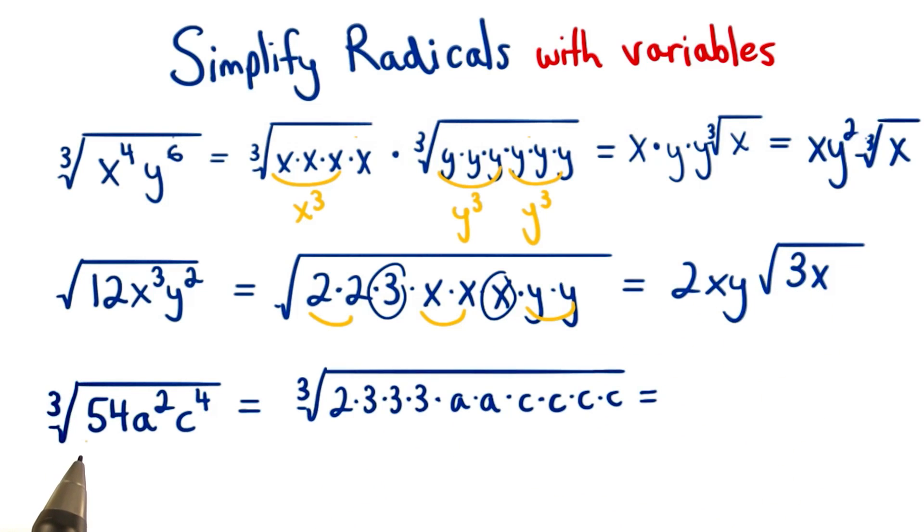For the second one, we want to find factors that repeat three times, since our index is a 3. We have three 3's and three C's, so we can pull out one 3 and one C from our radical.